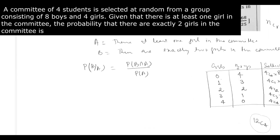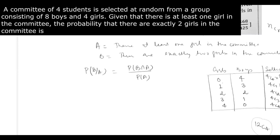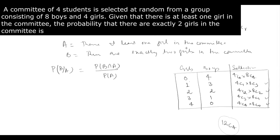We are looking at P(B intersection A) first. P(B intersection A) means exactly two girls in the committee AND at least one girl in the committee. Since 'at least one girl' covers one through four girls, the 'exactly two girls' case is fully contained within it. So P(B intersection A) is effectively P(B) itself.